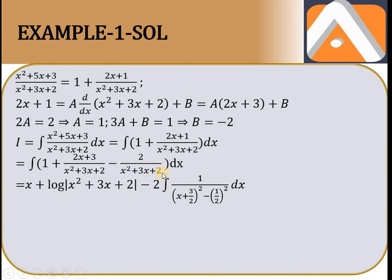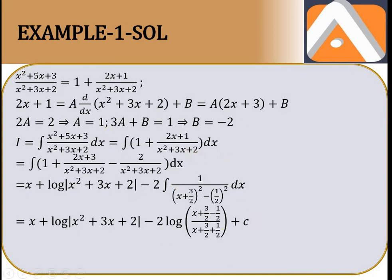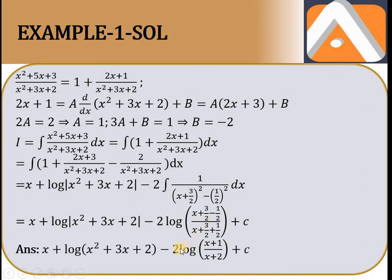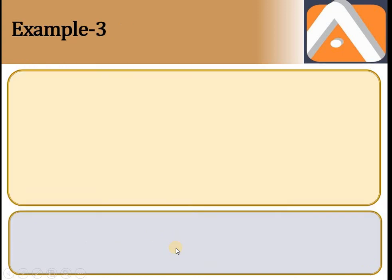Completing the square se (x + 3/2)² - 9/4 + 2 = (x + 3/2)² - (1/2)² ban jaata hai. Yeh 1/(x² - a²) form hai: formula 1/(2a) · log|x - a / x + a| lagao. Simplify karo: 2a mein 2 into 1/2 hoga, jo cancel ho jaayega. Answer simplify karke final answer aa jaayega.